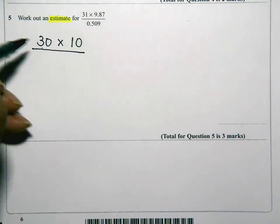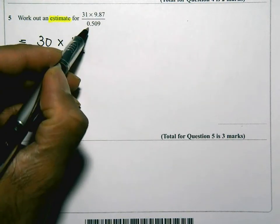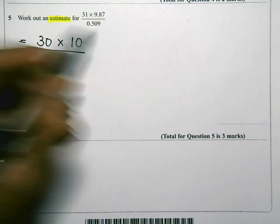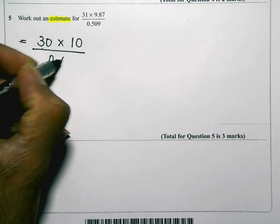And this one at the bottom here, to one significant figure, again, ignore the zeros at the beginning. So when you're doing significant figures, you ignore any zeros at the start. So that's going to be 0.5.